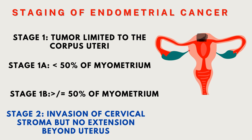Myometrium is the muscular wall of the uterus. In Stage 2, there is invasion of the cervical stroma but no extension beyond the uterus. Through direct spread, the tumor invades the cervix, but the cancer is still confined inside the uterus — it is not breaching the serosa and going outside into the pelvic cavity.